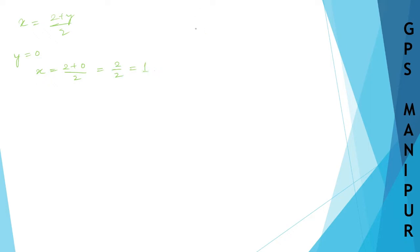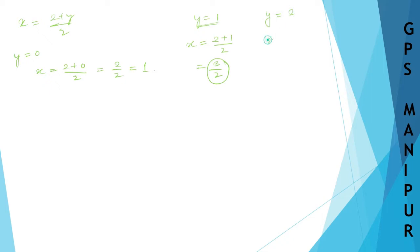When y is equal to 1, x will be 2 plus 1 divided by 2, which is 3 divided by 2. This cannot be divided evenly, so we cannot take this number. Let us try y is equal to 2. x will be 2 plus 2 divided by 2, which is 4 divided by 2, so x is 2.